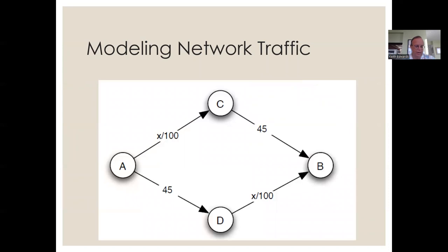Suppose we have 4000 cars wanting to get from A — Hawaiian Paradise Park — to B, which is Hilo town, as part of the morning commute. There are two possible routes: the upper route through C, or the lower route through D. If every car takes the upper route, the total time is 4000 divided by 100 is 40 minutes, plus 45 minutes from C to B, giving 85 minutes. Same result if they all choose the lower route: 85 minutes.